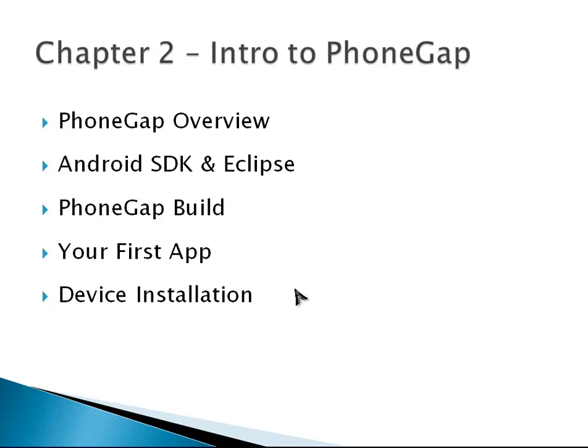With PhoneGap Build, you basically just upload your HTML, CSS, and JavaScript, and it'll spit out a native app file — or an APK, for instance, for Android — and you can just install that right on your device. PhoneGap Build is really the method we'll be using. We'll also build our first app, which will be a very simple app, and we'll look at how we can install that app onto the actual device.